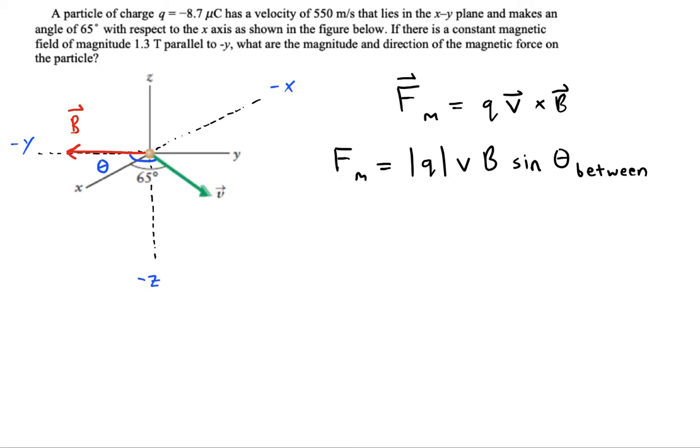All right, so that takes a little bit of three-dimensional geometry. You've got to know that there's going to be 90 degree right angles between any of these coordinate axes. So that means that this little piece here is 90 from B to x.